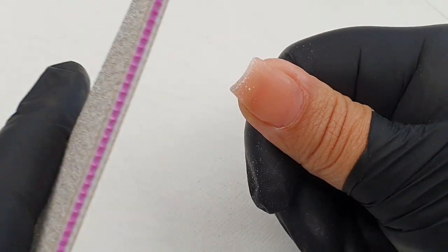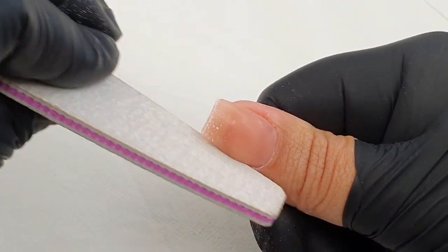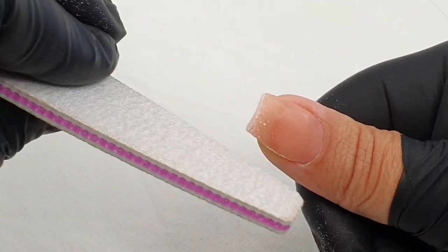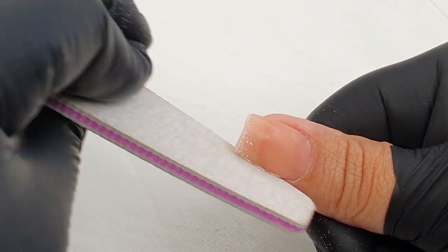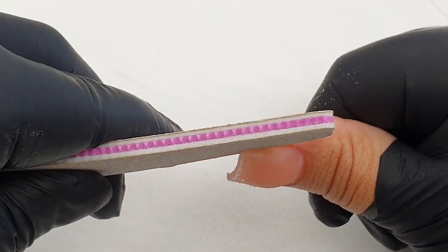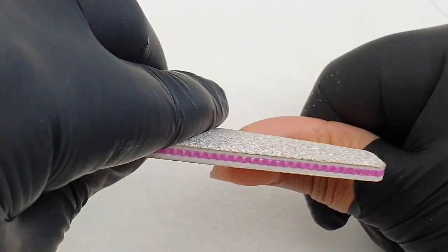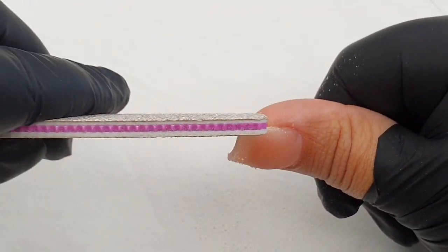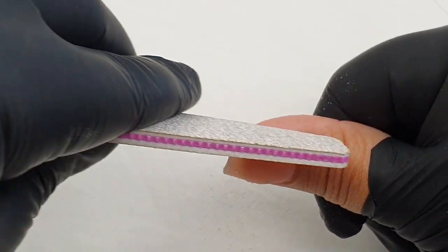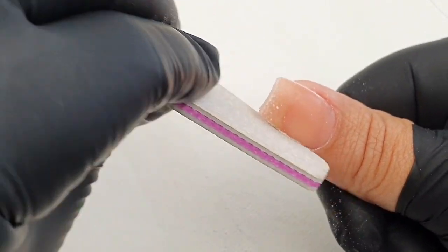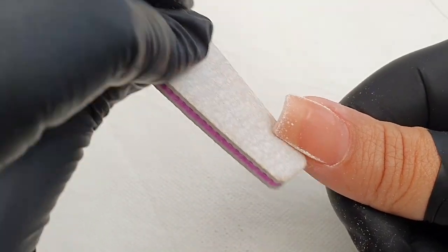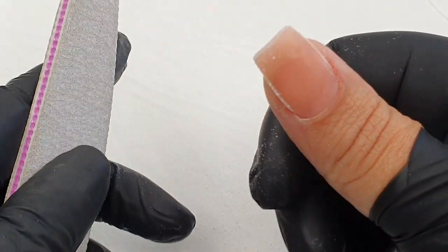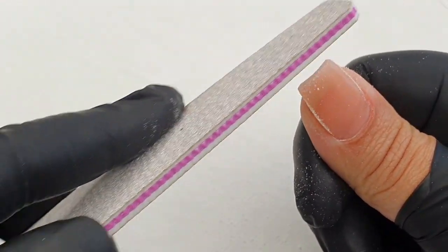I start by filing my free edge straight, and then I do my side walls. This gives me the visual perspective of what I want my nail to look like. Once I've got all my filing lines in place, which is my free edge and my side walls, we're going to start with the surface filing.